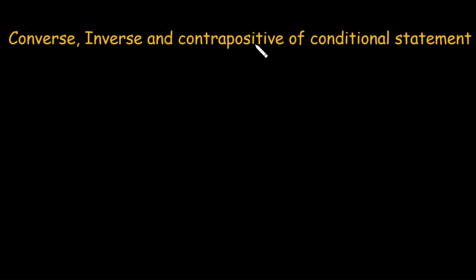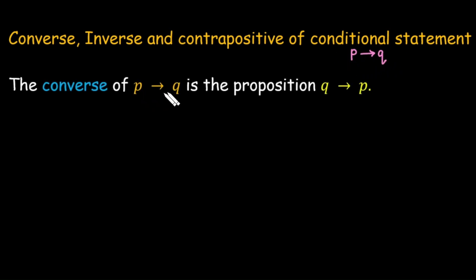Suppose we have the conditional statement with two propositions P and Q, and we say that P is implying Q. The converse of the statement is the proposition Q implies P. Basically, here P is implying Q; when we write Q is implying P, that is called the converse of that conditional statement.